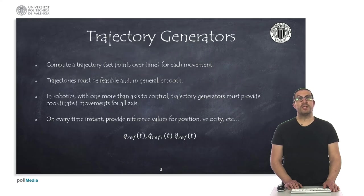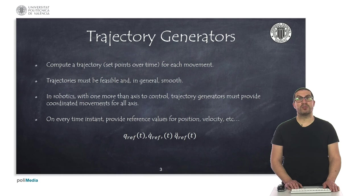In robotics, a trajectory generator is used to compute a set of points or configurations over time to move the robot from one position to another. Trajectories must be feasible in terms of kinematic and dynamic constraints, and in general they should be smooth. Trajectories can be used to provide coordinated axis control so that all joint movements finish at the same time.